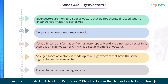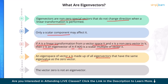What are eigenvectors? Eigenvectors are non-zero special vectors that do not change direction. If A is a linear transformation from a vector space V and X is a non-zero vector in V, then V is an eigenvector of A if A(X) is a scalar multiple of vector X. An eigenspace of vector X is made up of all eigenvectors that have the same eigenvalue as zero. The vector zero is not an eigenvector.